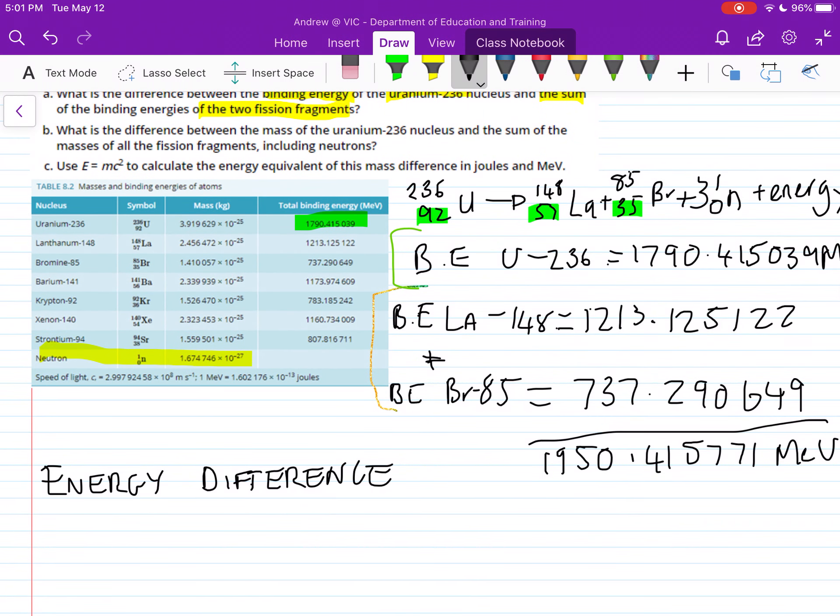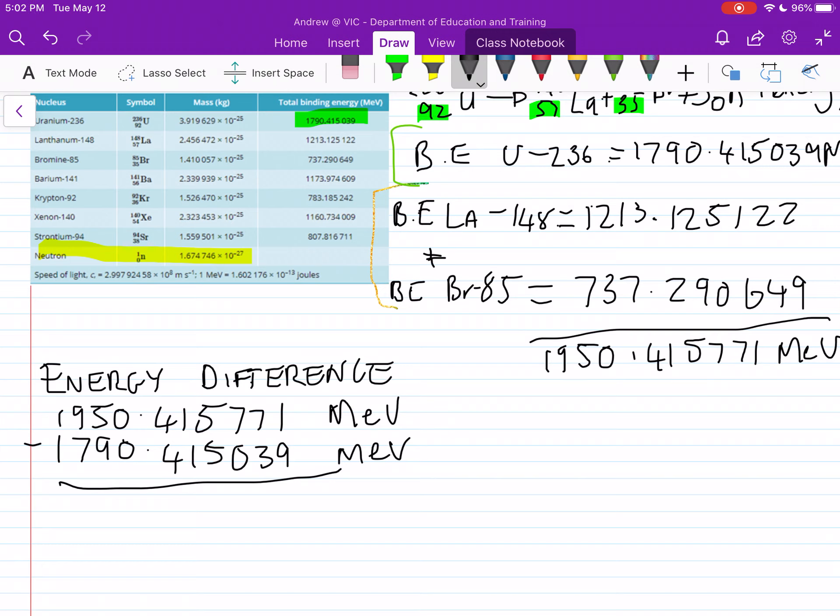Our energy difference, this is just 1950.415771, and this is taking away from our binding energy of our uranium, which is 1790.415039. And this is all in, just remember, mega electron volts. This will give you a value of 160.000732.